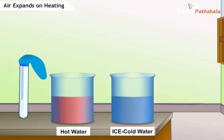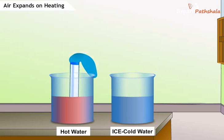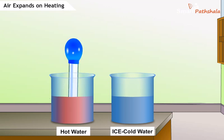Pour some hot water in a beaker. Insert the boiling tube with the balloon in the hot water so that the free end is inside the beaker. Observe for 2-3 minutes for any change in shape of the balloon.